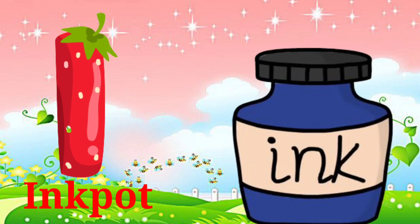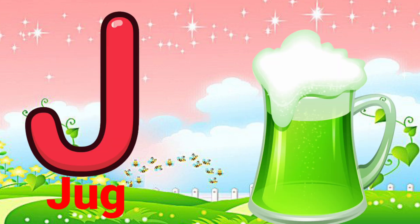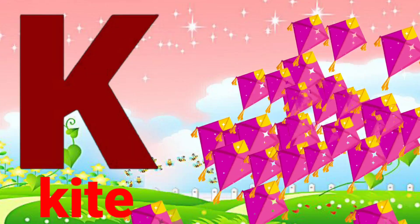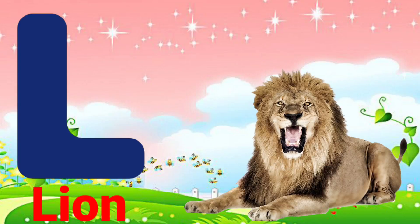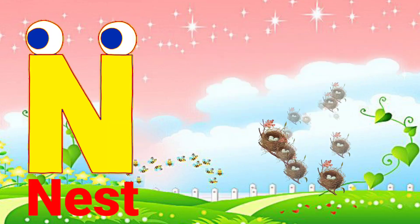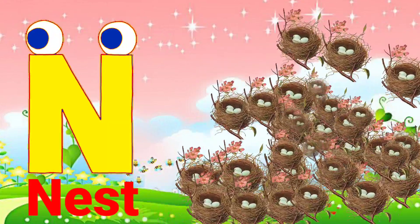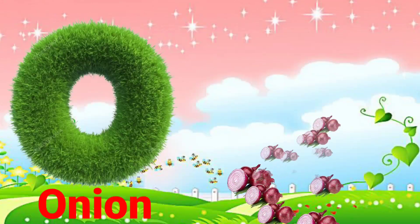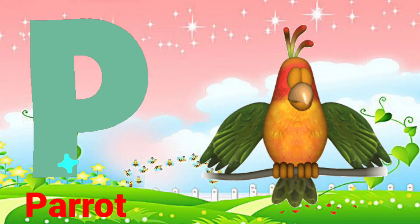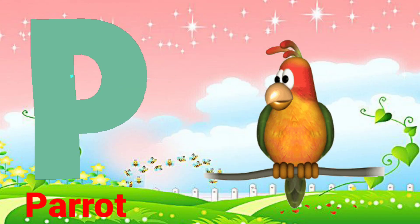I for inkpot, J for jug, K for kite, L for lion, M for monkey, N for nest, O for onion, P for parrot.